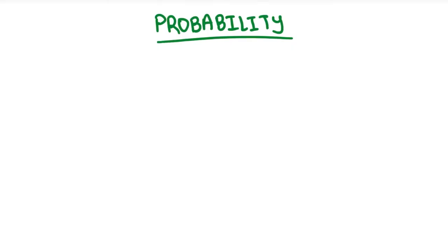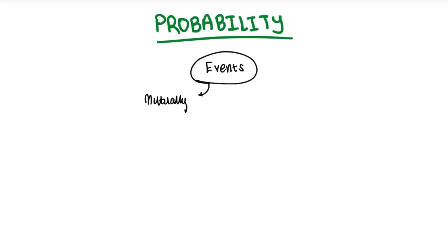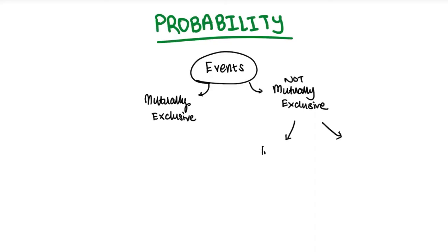For your A levels you need to know what kind of events you're looking at in probability. So we have events, and from events you have one type where they are mutually exclusive, and on the other hand when they are not mutually exclusive. Under the case where they are not mutually exclusive, they are either going to be independent events or they are not independent. This is the overarching idea of probability for A levels.